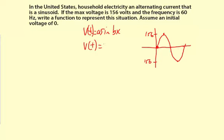So our volts is a function of time. The amplitude is 156. And now we need to determine the B value, which is based on the period. Now the frequency is given as 60 Hertz.